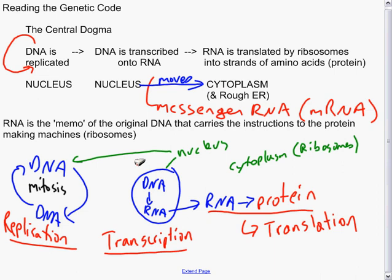Both of these replication and transcription occur in the nucleus. The RNA is moved to the cytoplasm or rough endoplasmic reticulum where ribosomes then translate the RNA into protein. This process is known as translation.